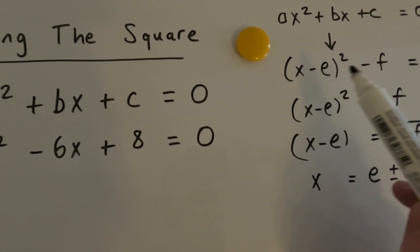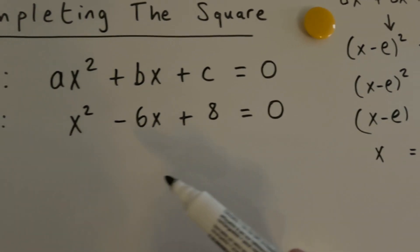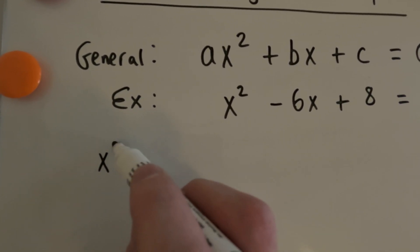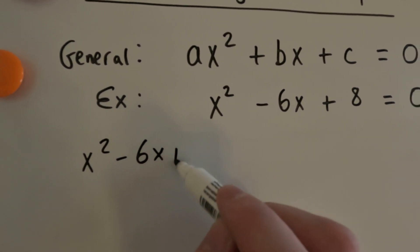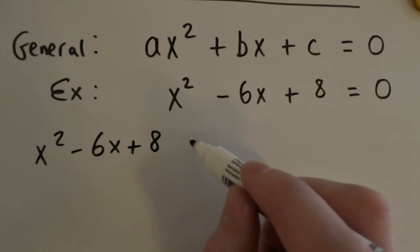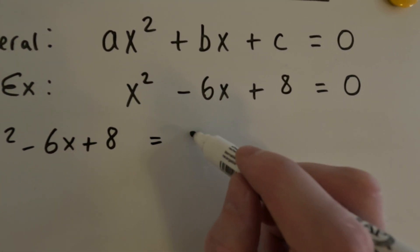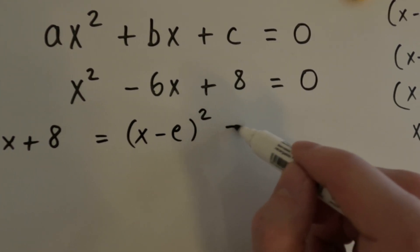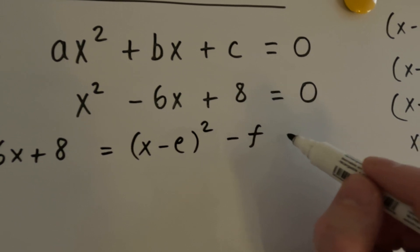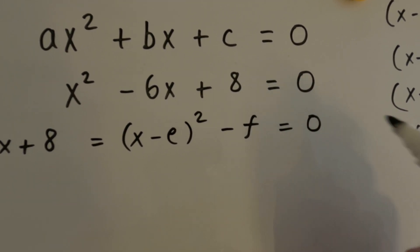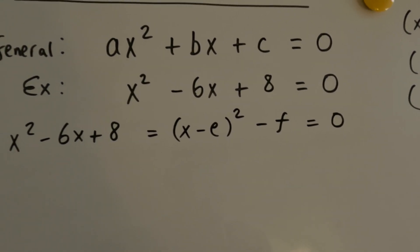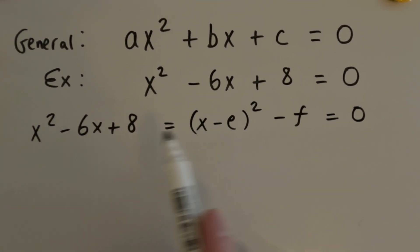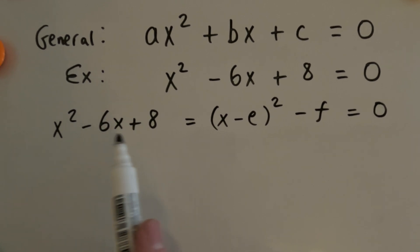In fact, let's just, I'll write the example down again. And then now what we're going to do is we're going to set that equal to x minus e all squared minus f. And obviously that equals zero because we're solving for x. Now, this is the form we want it in, and this is the form we have it currently in.